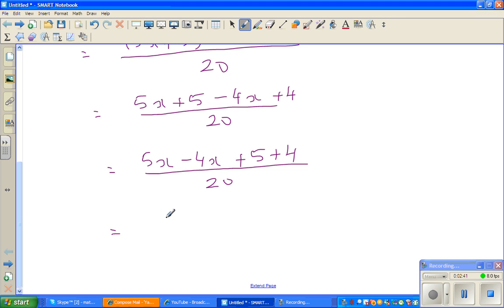Okay, so this is 5x minus 4x is x plus 9 over 20. And this is your answer. Okay, you can't go any further.